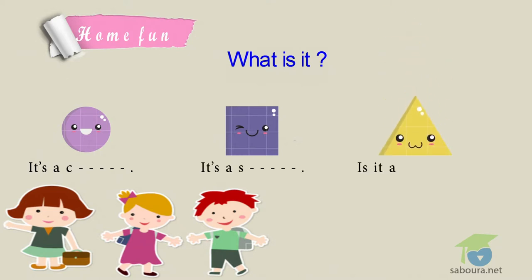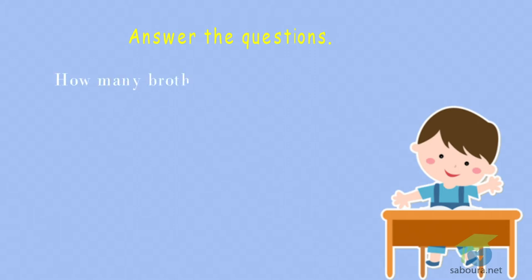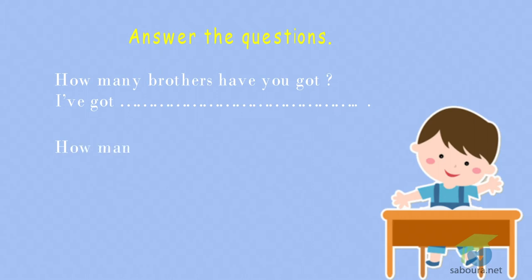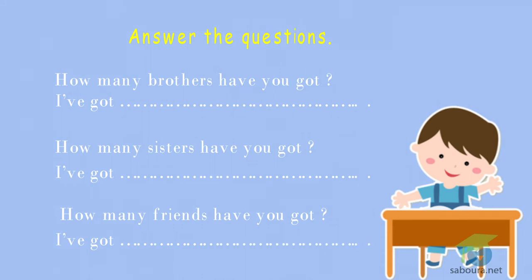Answer the questions. How many brothers have you got? I've got one brother. How many sisters have you got? I've got two sisters. How many friends have you got? I've got four friends. The answer: how many brothers have you got? I've got one brother. How many sisters have you got? I've got two sisters. How many friends have you got? I've got four friends.